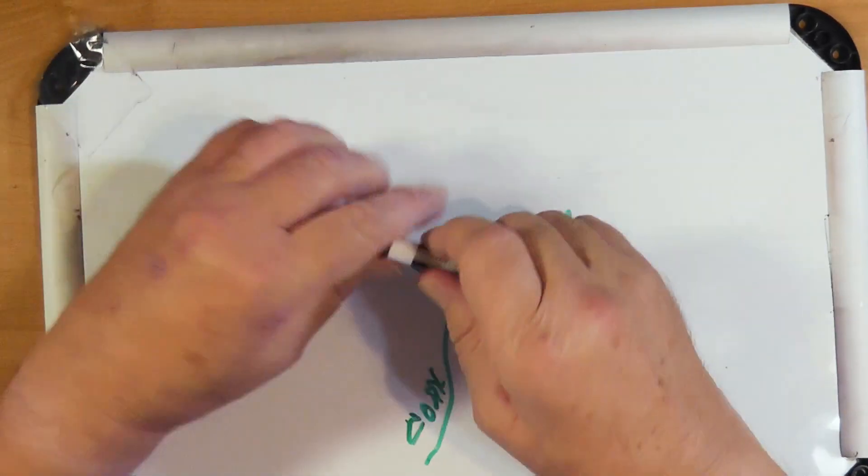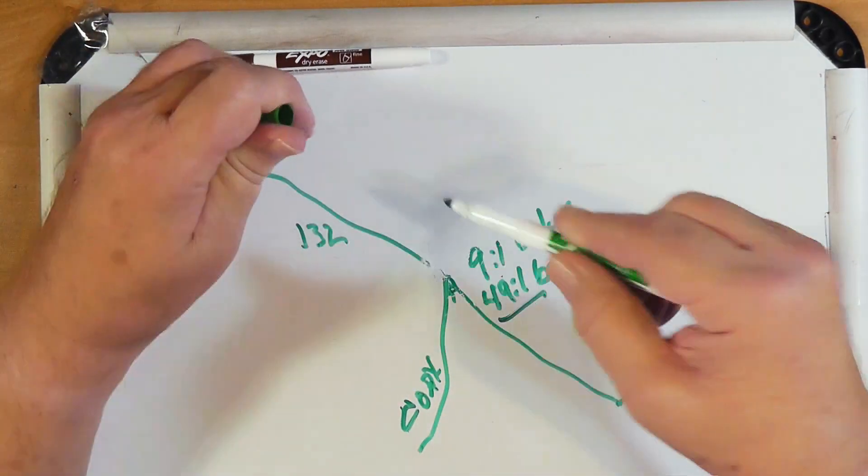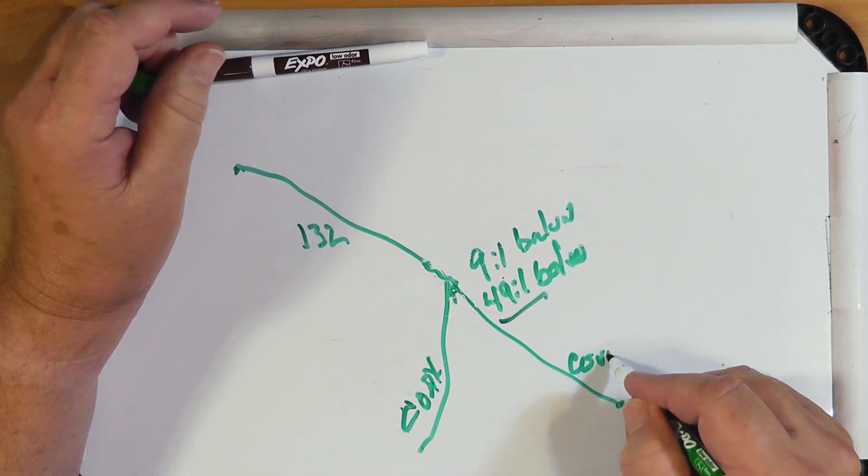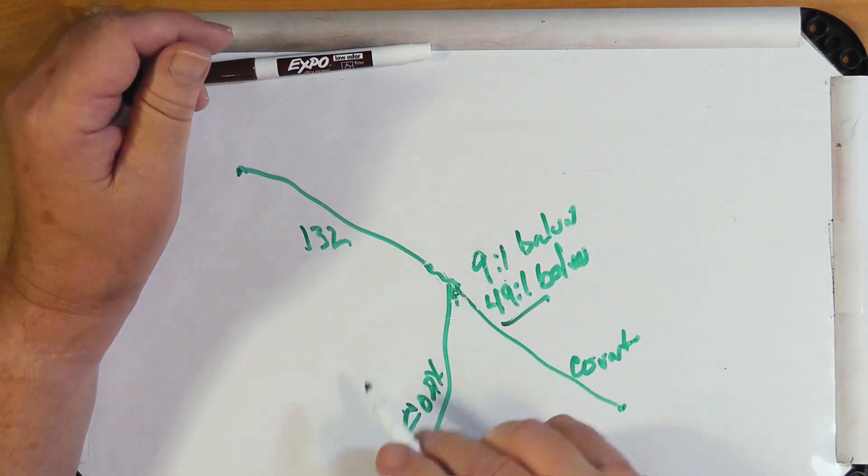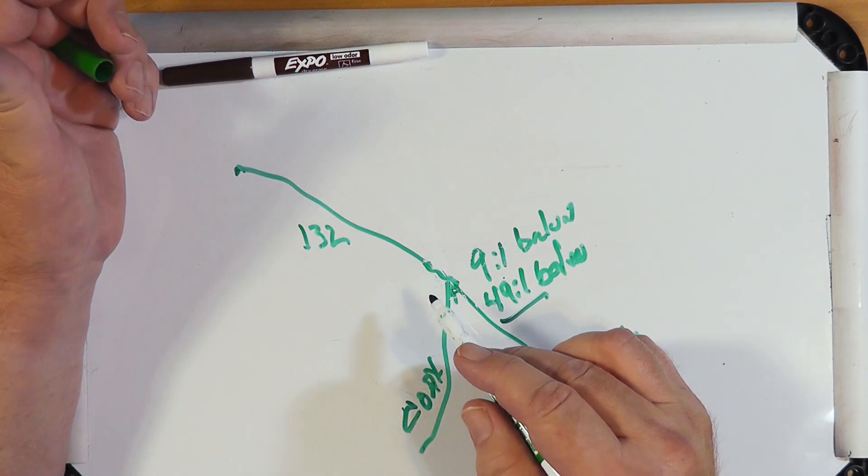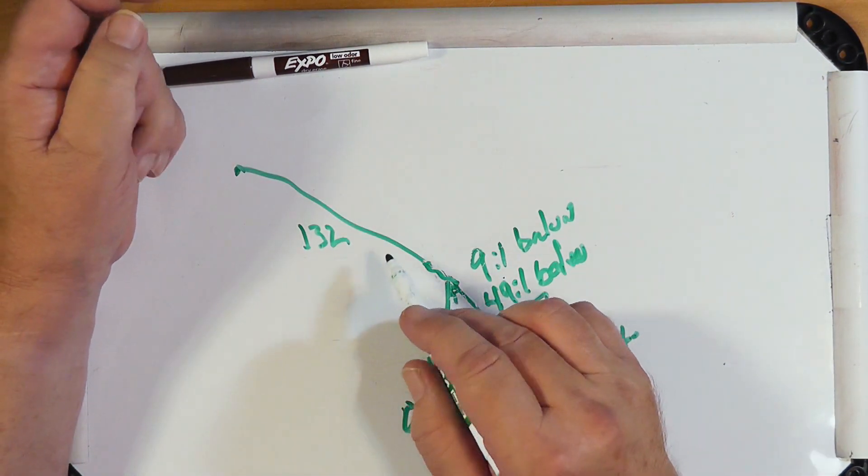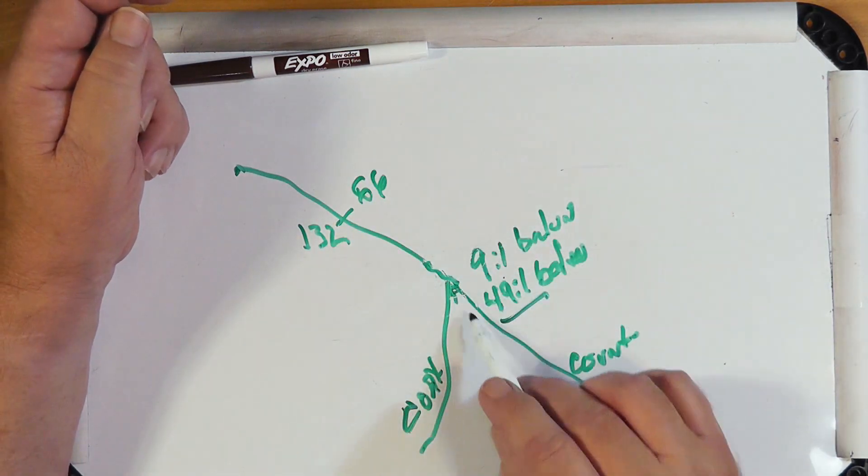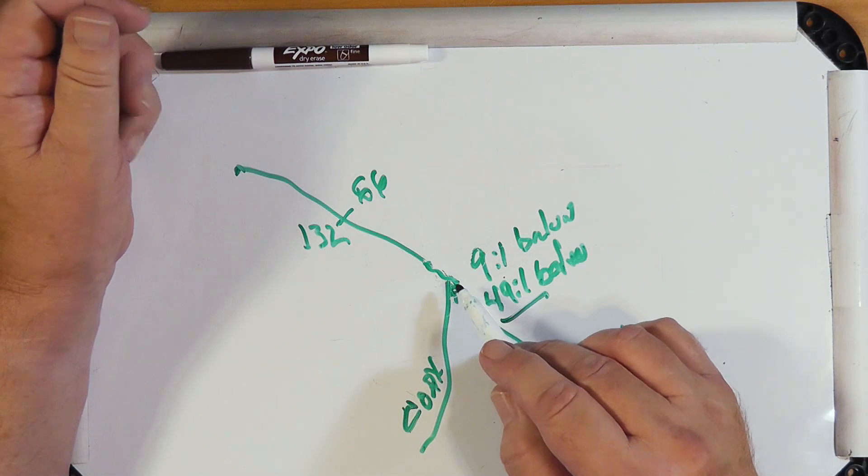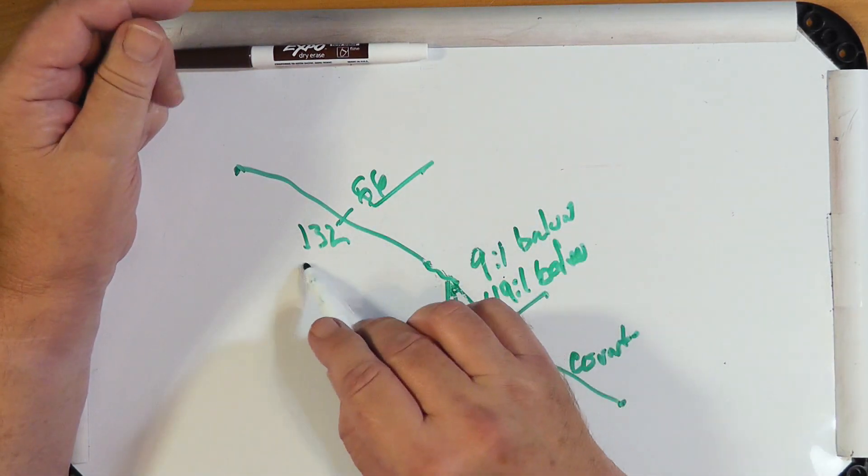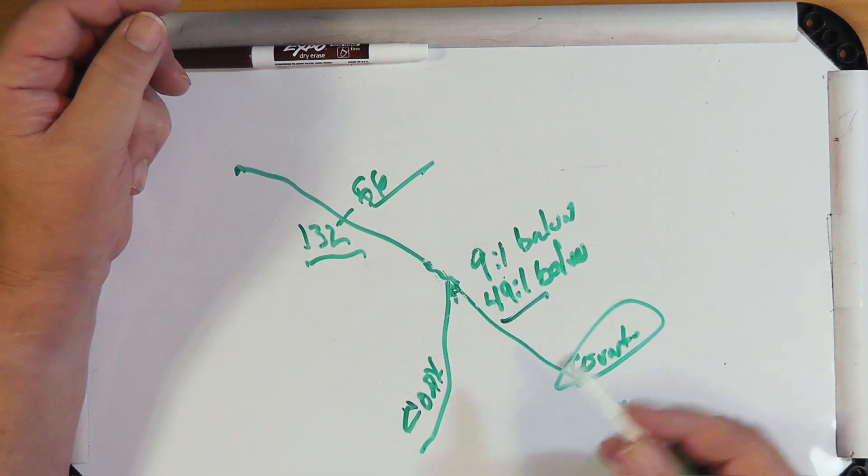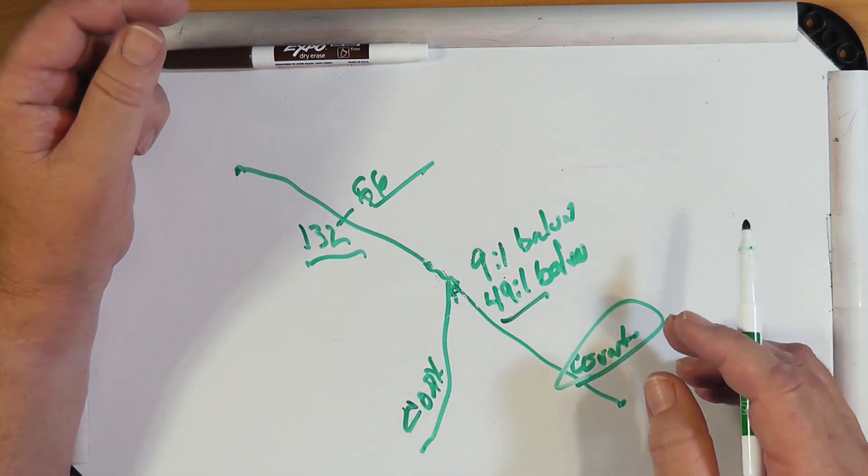And you may or may not need the counterpoise. And you have an end fed half wave dipole on 80 meters. You can do this at 40 if you want. It'd be 66 feet long. Okay. And that'll give you, this would give you 40 and up. This would give you 80 and up. Okay. And the counterpoise, maybe, maybe not. With the end fed antennas, you don't need that.